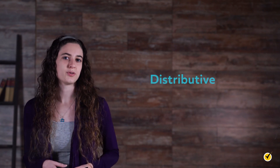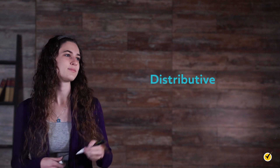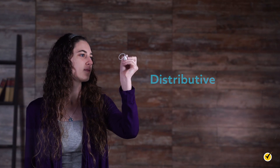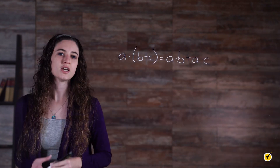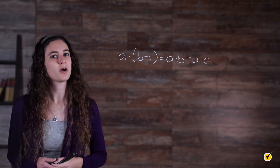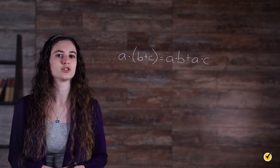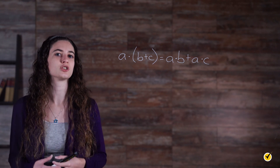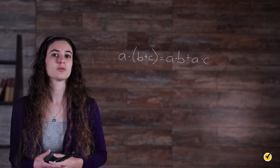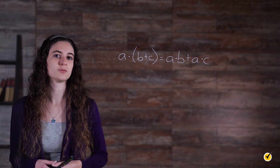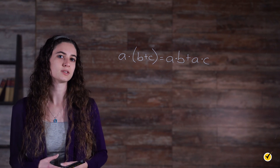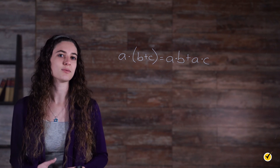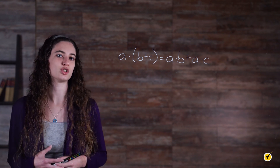And finally, the last property we'll be looking at is the distributive property. The notation once again dictates that this property applies only to the operations of multiplication and addition. Specifically, if a term is being multiplied by an expression in parentheses, then the multiplication is performed on each of the terms. Here is an example to prove that this algebraic move is justified.